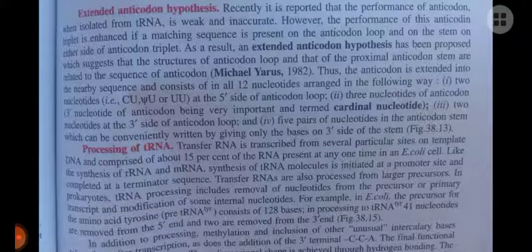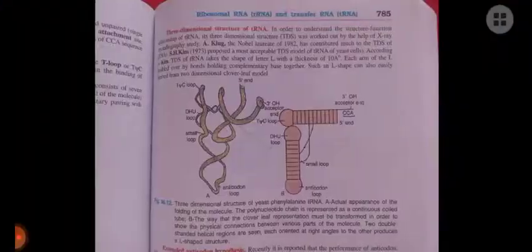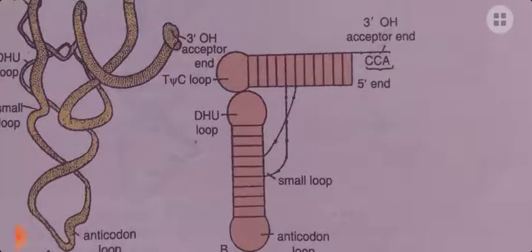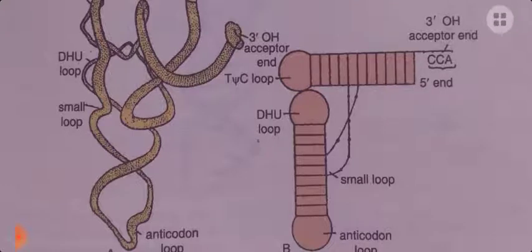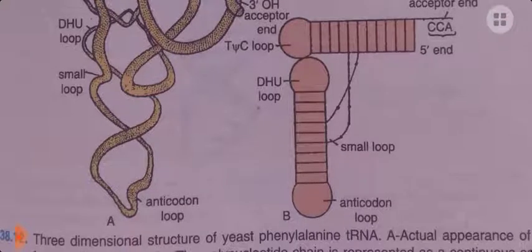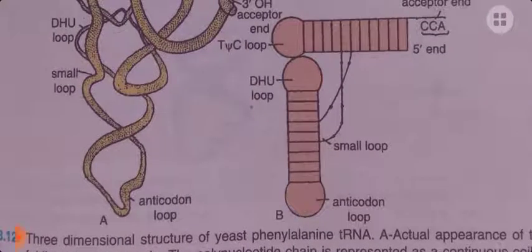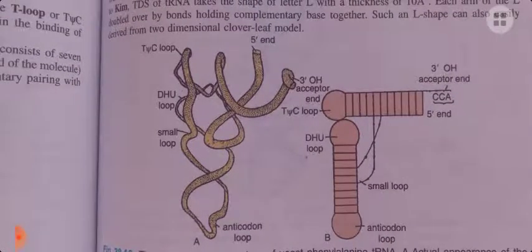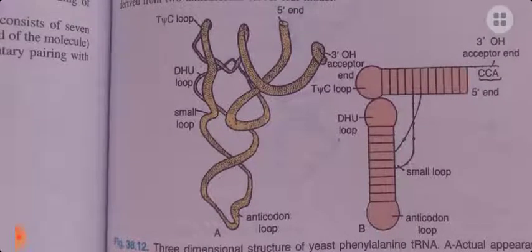This was all for the tRNA structure. In the L-shaped three-dimensional structure, you can see the CCA sequence at the acceptor arm where the amino acid attaches, as well as the positions of the D-loop, T-psi-C loop, anticodon loop, and the small variable loop. In reality, the structure looks like figure A.